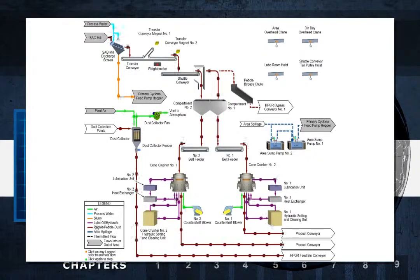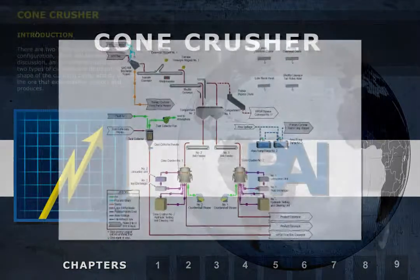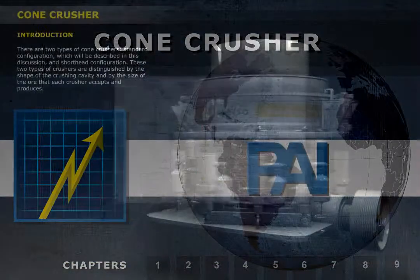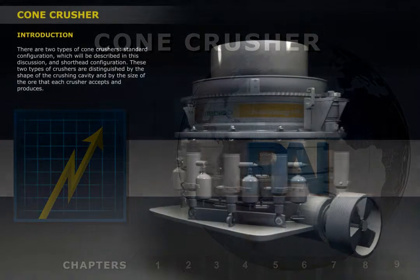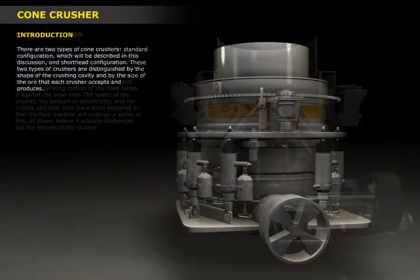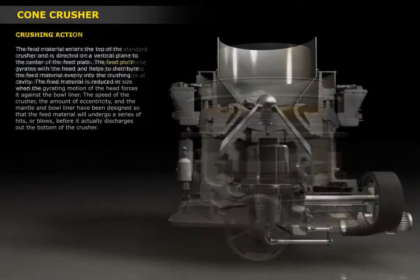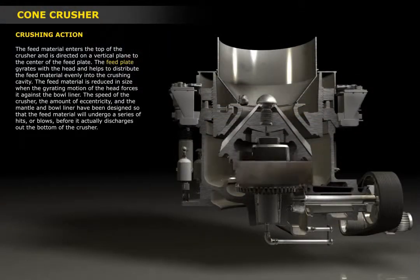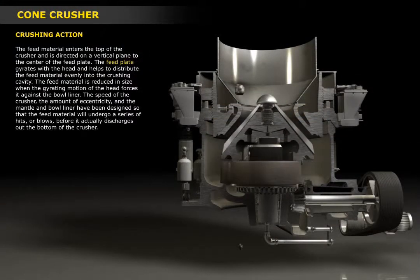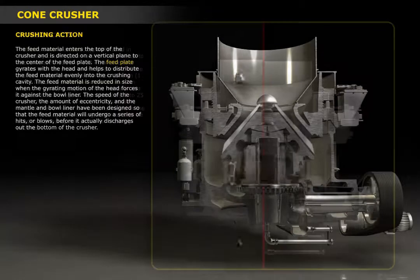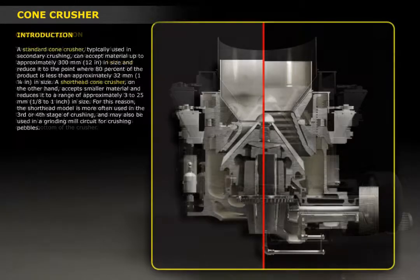In a second stage, crushed ore from a primary crusher is fed into a secondary or standard cone crusher, in which the ore is further crushed between a gyrating mantle and stationary bowl liner.